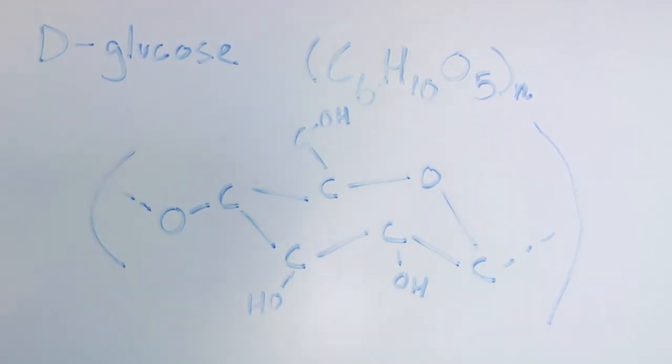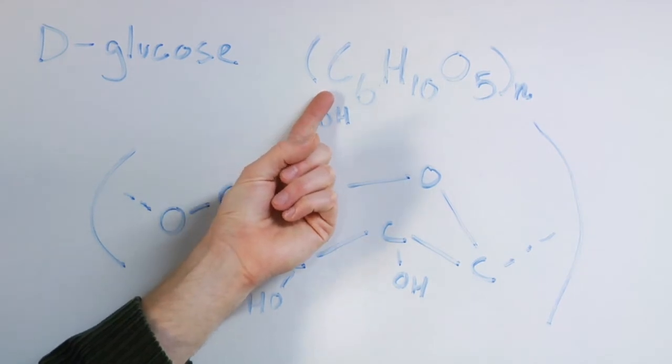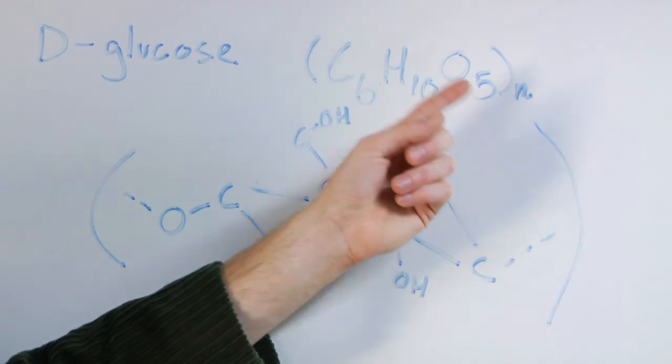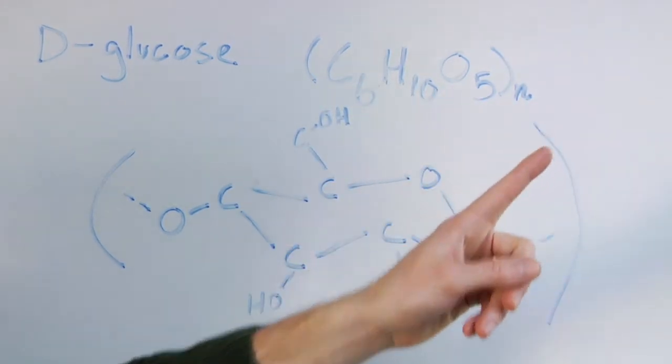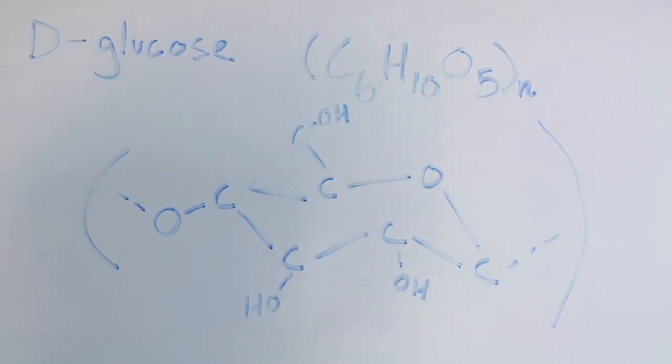It has a chemical structure of C6, H10, O5, and the N here simply means that it can be repeated for however many number of times it needs to be repeated. It can stretch hundreds to thousands, up to 10,000 glucose molecules long.